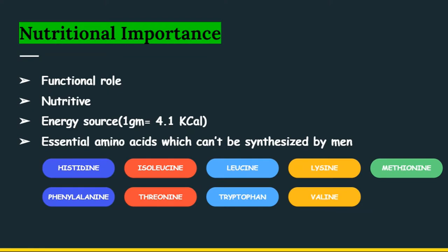There are some essential amino acids which cannot be synthesized by humans. There are 20 amino acids required by the body and 9 of them cannot be synthesized by man. These are histidine, isoleucine, leucine, lysine, methionine, phenylalanine, threonine, tryptophan, and valine.